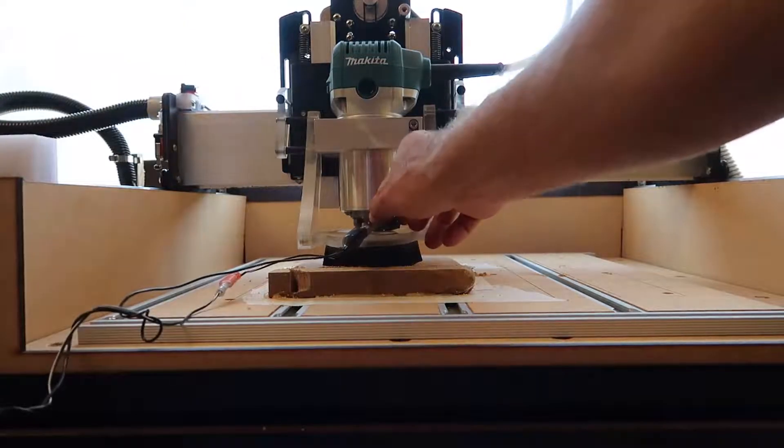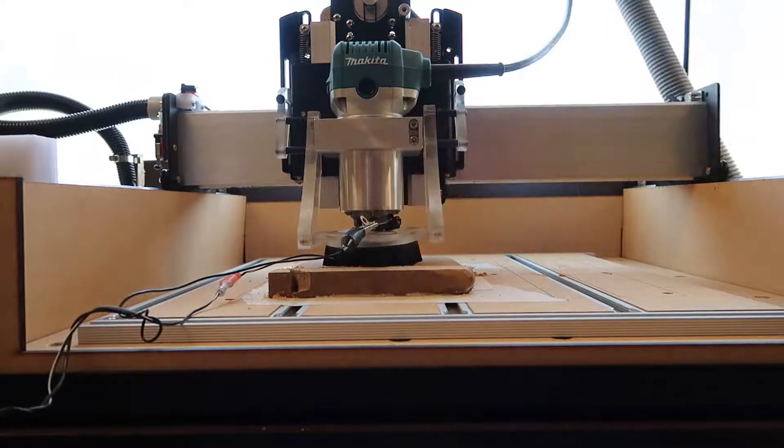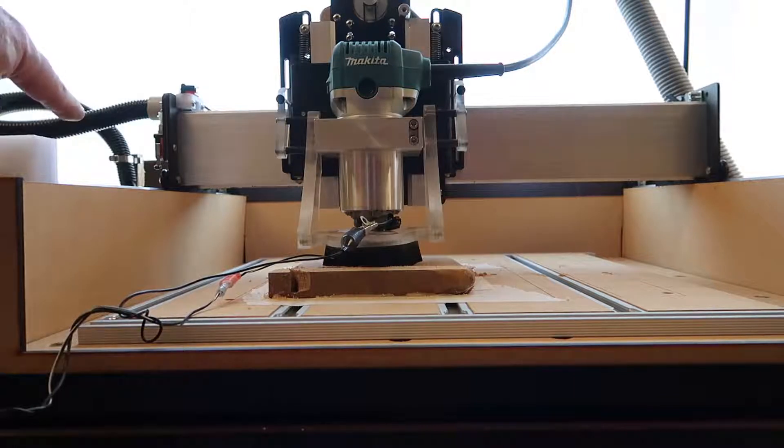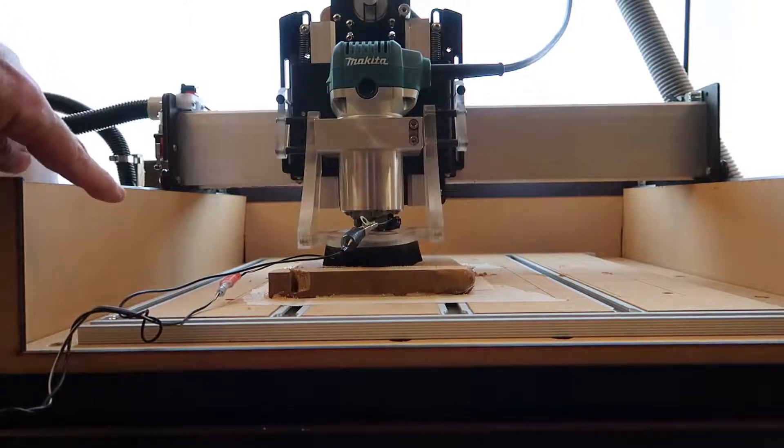I'm going to hit $H. That's going to zero the Z first, and then it's going to move the carriage to the front left to zero at this point here.